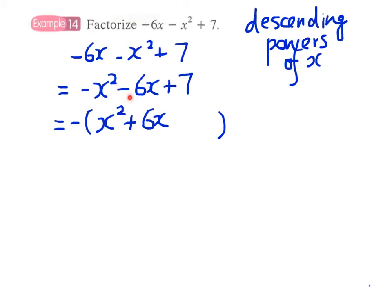Therefore, we have -(x² + 6x - 7) because minus times +6x gives us -6x. We have to change the sign here, and again we have -7 inside the bracket. Now we have the form x² + bx + c, and we can apply the cross method.